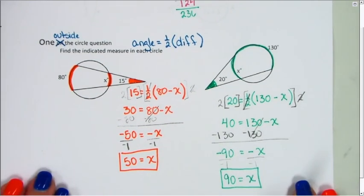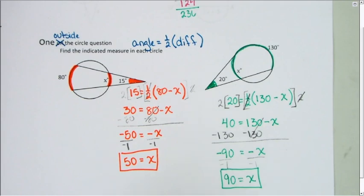And that's how we find a missing value when we have an angle formed outside the circle.